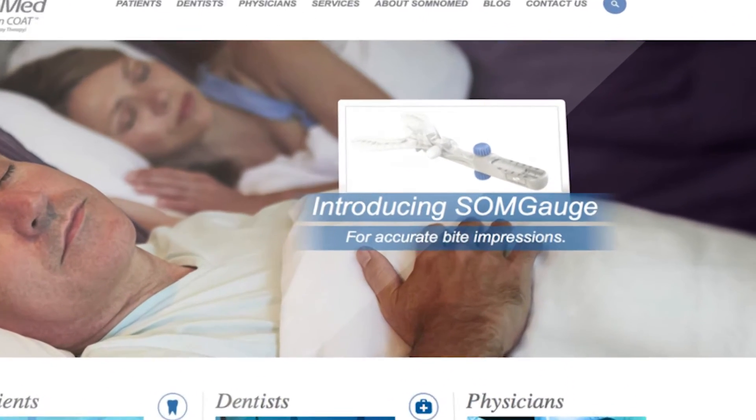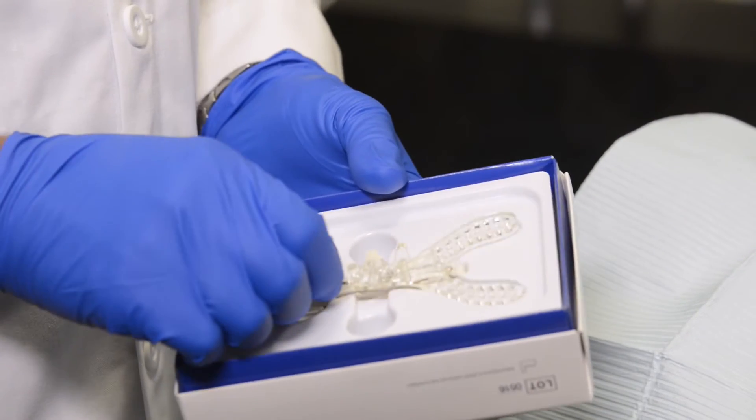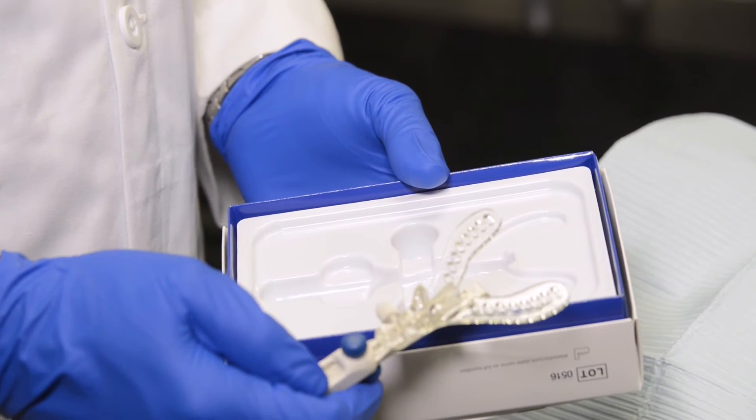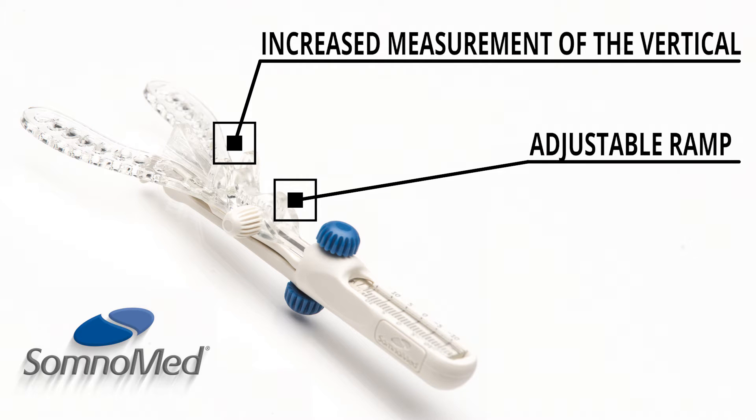Somnomed's new Somgage gives you more of what you need to quickly and easily capture the most accurate bite registration. Somgage is the first gauge of its kind to allow for accurate calibration of vertical dimension with its adjustable ramp, lending to improved device integrity.